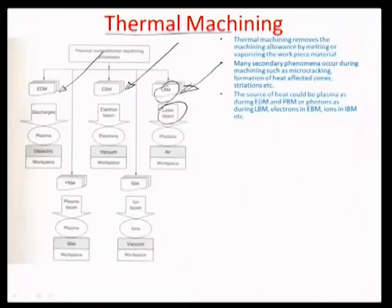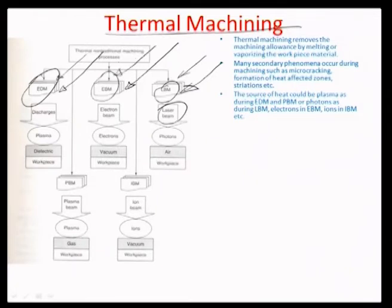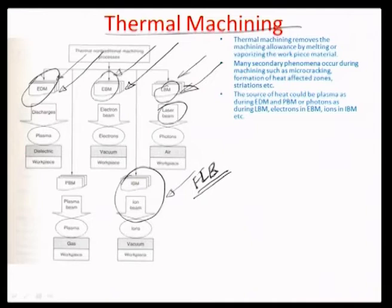In this thermal machining section we will investigate EDM and LBM in great detail, as they are very often used for microsystems fabrication. We will also look at e-beam related processes, and then if time permits, ion beam machining. A very modern instrument for writing at the nano scale is the focused ion beam machine or FIB, used for drilling operations even at the molecular level and for both surface and bulk micro machining.